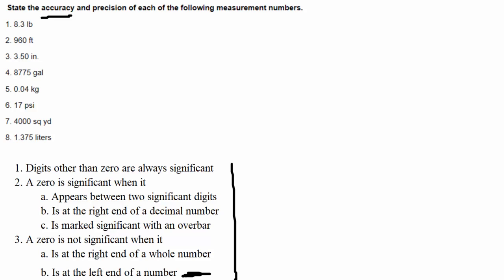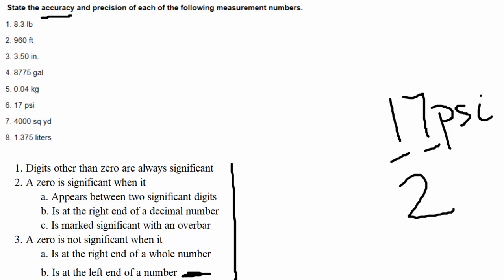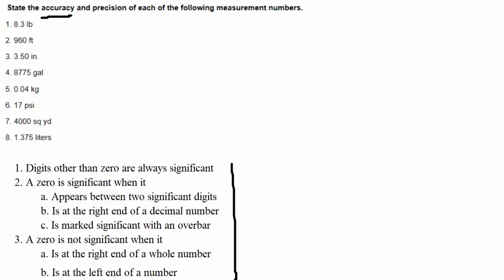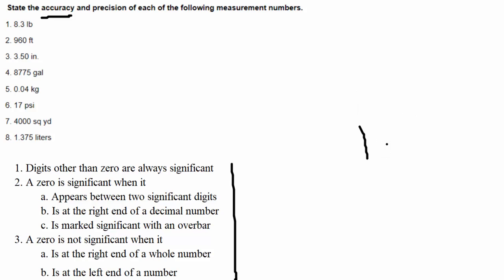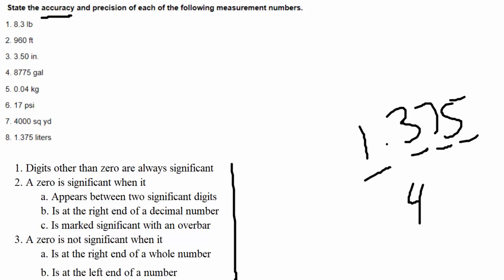Moving on: 17 psi has two non-zero digits and nothing else, so two significant digits. Next: 4000 square yards — zeros at the right end of a whole number are not significant, so we have only one significant digit. Our final example: 1.375 liters — no zeros, and four non-zero digits, which means four significant digits. Remember, the number of significant digits is the same thing as accuracy.